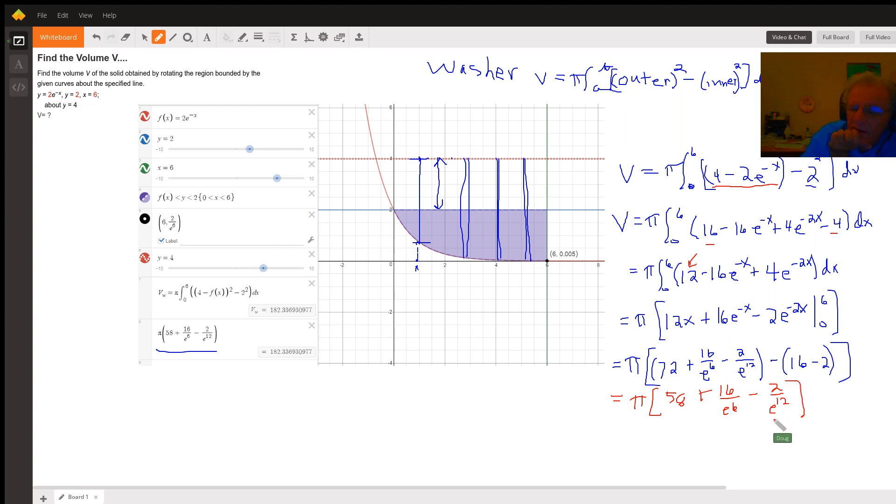By getting a common denominator of e to the 12th, and then multiplying pi times that numerator. But this sort of proves that by doing this by hand results in the same decimal value.